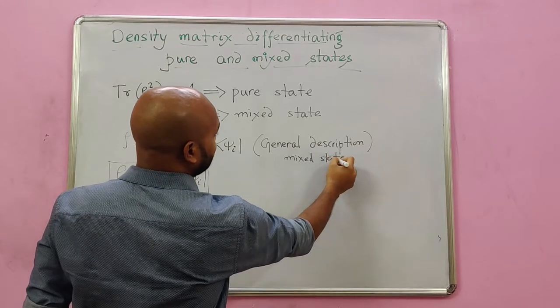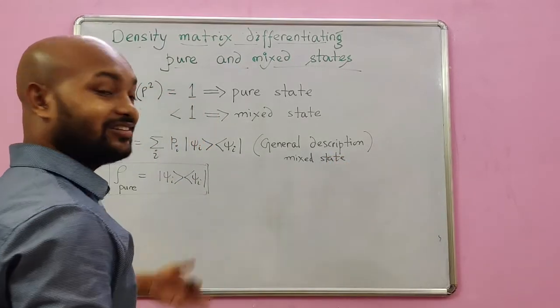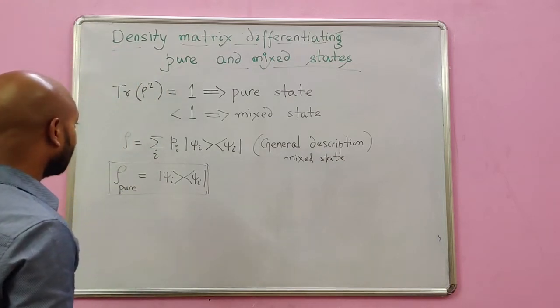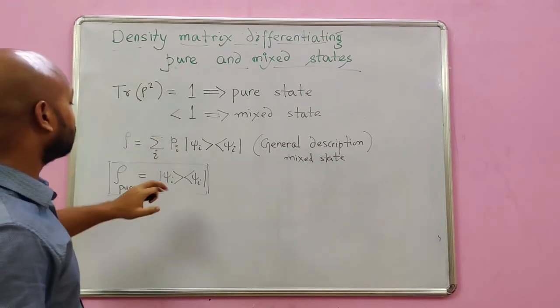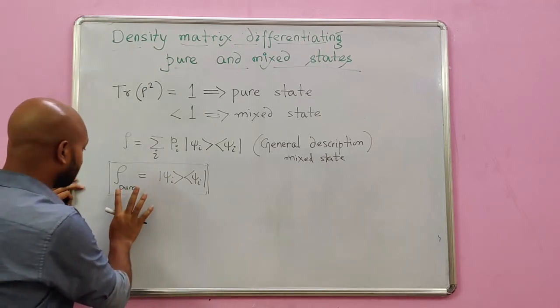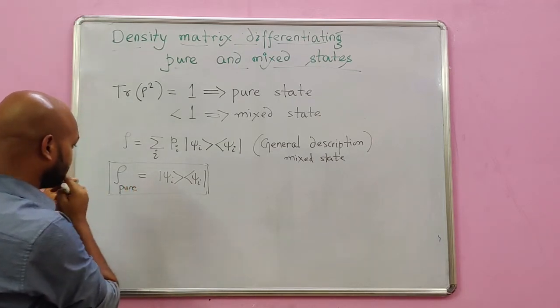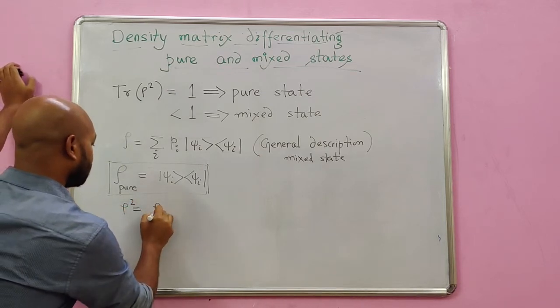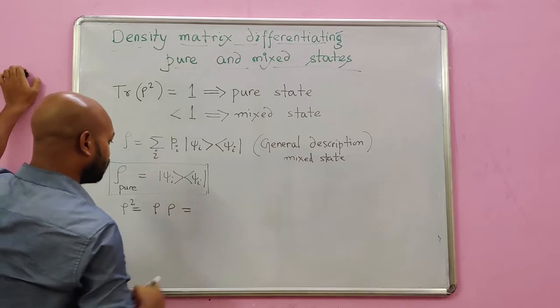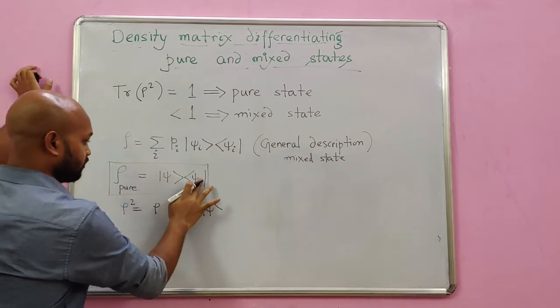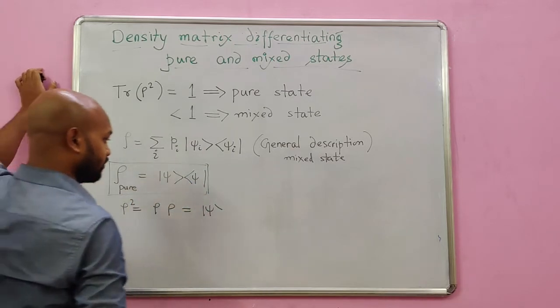You could also say that pure state then there is one case of mixed states. Now we take the trace of the rho squared of it. Certainly, in case of pure state, let's see first, in case of pure state. If I take rho squared, then it's going to be rho, rho. It's going to be then, sorry there is no i here because it's a single component on this i.